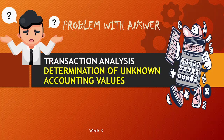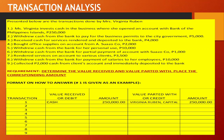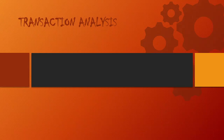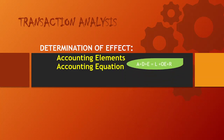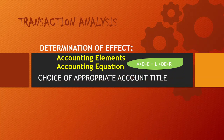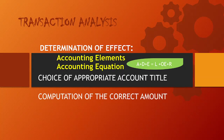Welcome back to my channel. Today's video is all about your Week 3 activity pertaining to transaction analysis and determination of unknown accounting values. This is the problem, but before I present its answer, let us have a brief discussion on what transaction analysis is all about. It pertains to the process of analyzing a business event or transaction to determine its effect on the accounting elements, our accounting equation, the appropriate account title to use, whether what should be debited or credited, and the correct amount to be recorded in our books of accounts.